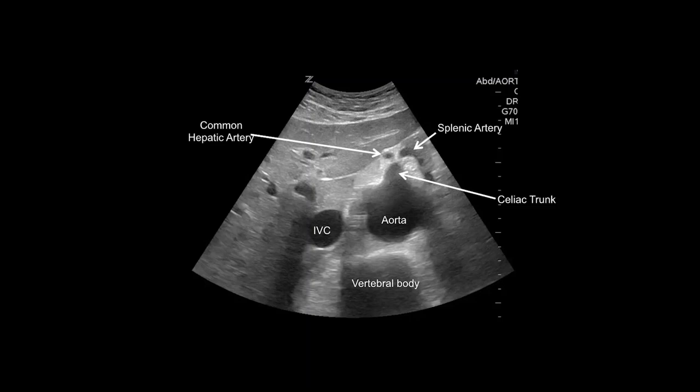Our next objective is to find the celiac trunk and the SMA. These branches may be difficult to see and will take some patience and small adjustments of the probe to bring into view. Occasionally, bowel gas will obstruct these views completely. The celiac trunk is the most superior abdominal branch that can be observed on ultrasound. You can see the trunk in this image arising from the aorta, traveling anterior and bifurcating. The bifurcation of the trunk is sometimes described as the seagull sign, as it appears like the wings of a bird.